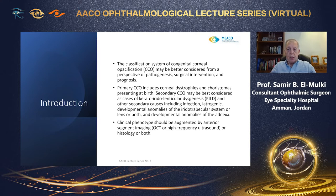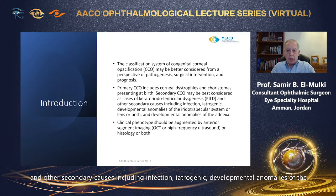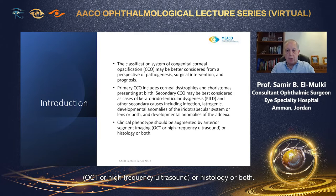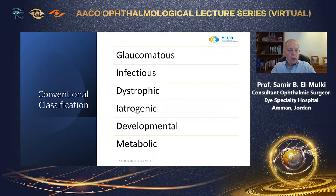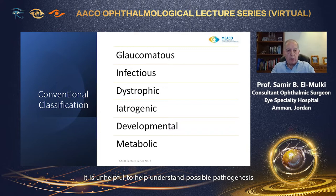Primary CCO includes corneal dystrophies and choristomas presenting at birth. Secondary CCO may be best considered as cases of kerato-iridolenticular dysgenesis and other secondary causes, including infection, iatrogenic, developmental anomalies of the iridotrabecular system or lens or both, and developmental anomalies of the adnexa. Clinical phenotype should be augmented by anterior segment imaging, OCT, high-frequency ultrasound, or histology. Although such a classification may be helpful to remember all the etiologies involved, it is unhelpful in understanding possible pathogenesis or which cases of CCO are likely to do well with surgical intervention, particularly penetrating keratoplasty.